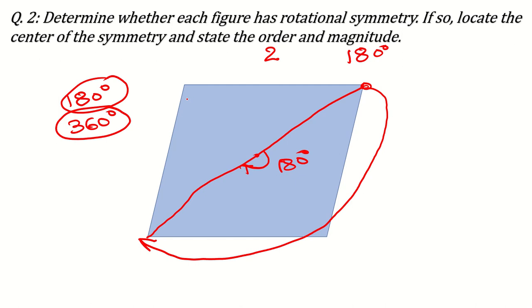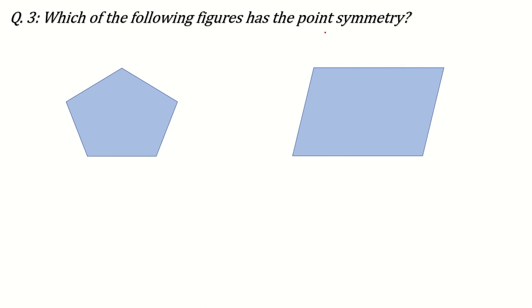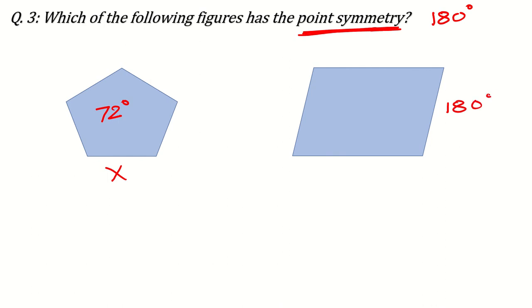Next, they can ask which figures have point symmetry. Point symmetry is related to rotation about a point, similar to finding an image with respect to the origin. A figure has point symmetry if its magnitude is 180°. The pentagon's magnitude was 72°, so it cannot have point symmetry. But the parallelogram's magnitude is 180°, so it does have point symmetry.